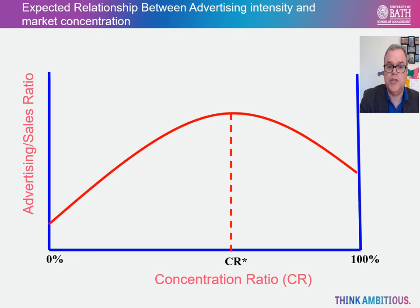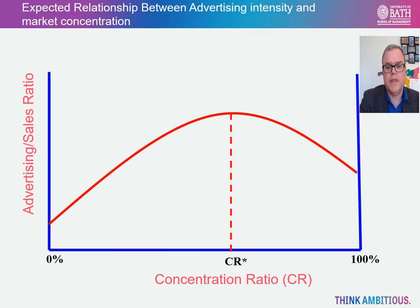However, past a certain point, advertising intensity starts to fall. In highly concentrated markets, firms recognise their increasing interdependence and come to realise that aggressive advertising will not necessarily generate a significant increase in market share, because any advertising campaign they embark upon will be matched by their rivals. Advertising itself incurs significant costs and will eat into profit margins, and so firms in tight oligopolies will tend to ease off on their aggression. Finally, at a concentration ratio of 100%, that implies a monopoly. Monopolists need to advertise their product to let people know it is out there. However, a monopolist is not looking to increase market share because she already has 100% of the market. Hence, under monopoly, advertising intensity is lower than under oligopoly.